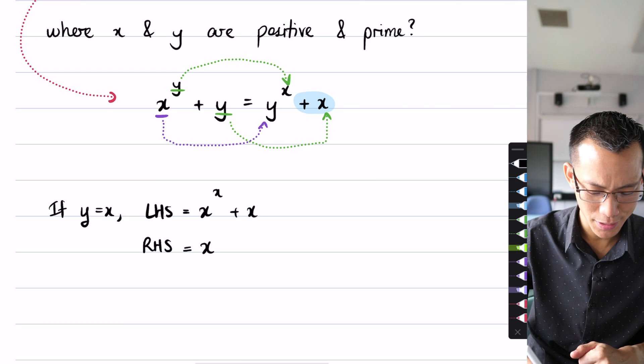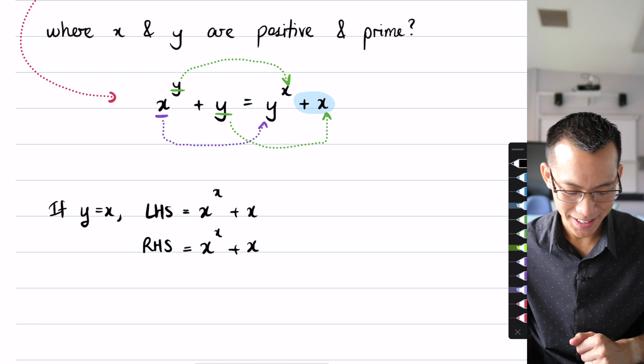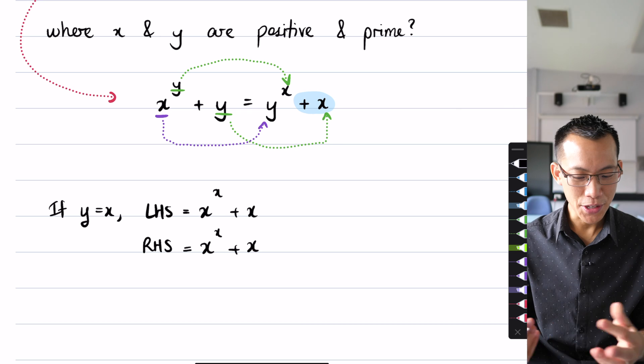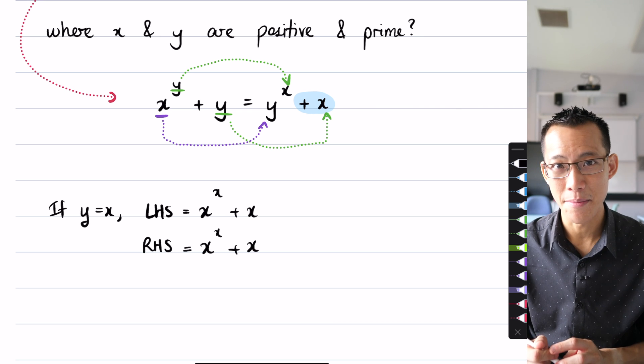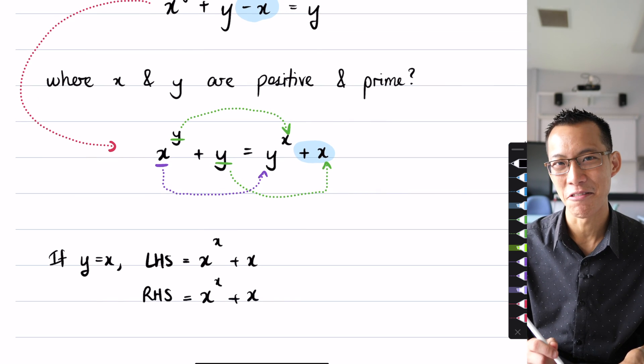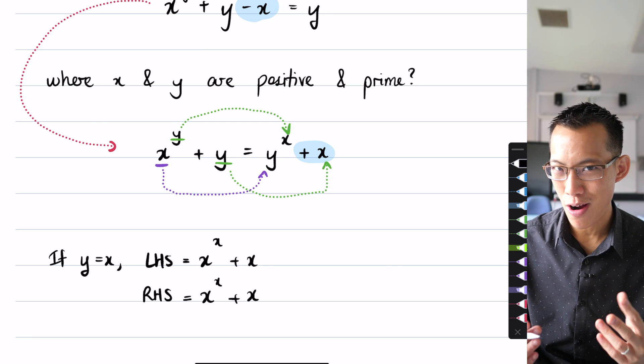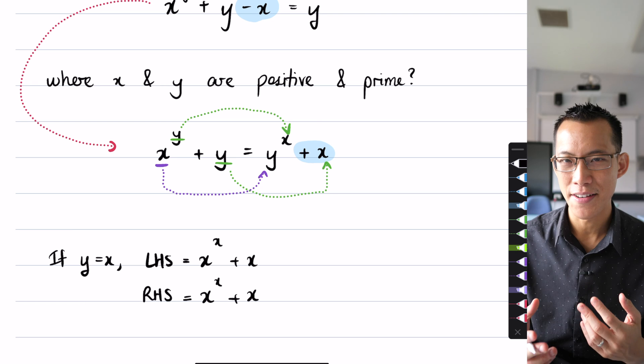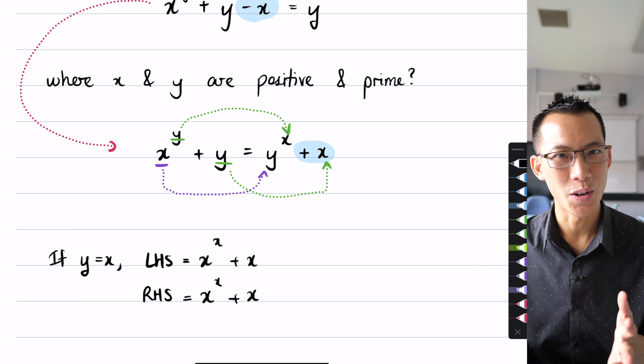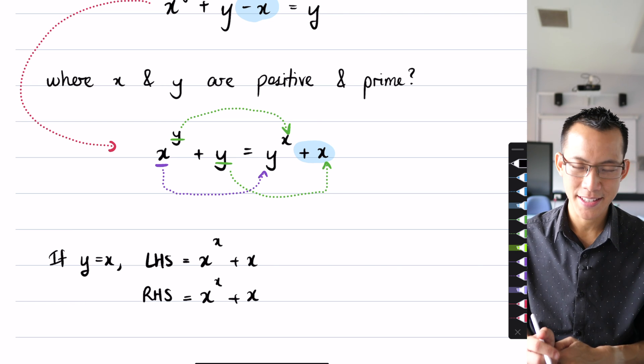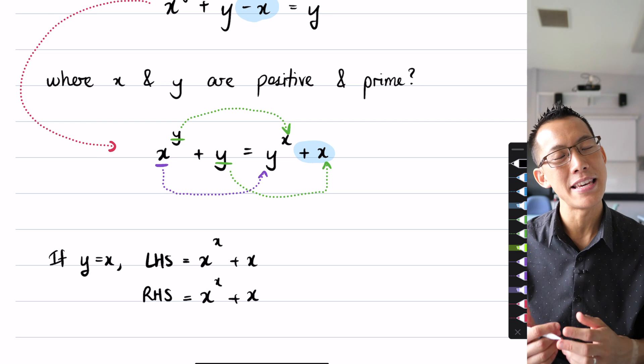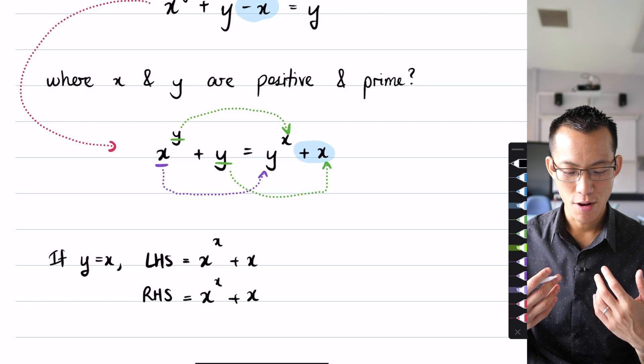And the right-hand side, if I do the same thing, there's only a single y there. If I swap it with an x you get x to the x plus x. Which means that because there is an infinite number of prime numbers, thank you Euclid for proving that in a wonderfully elegant way, so long as y and x are the same prime number like three or five or seven, this left-hand side and right-hand side are obviously equal.